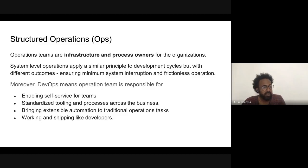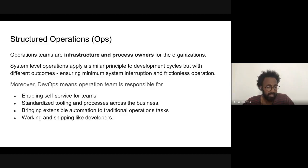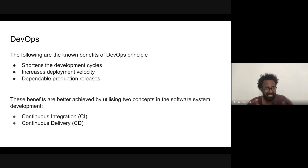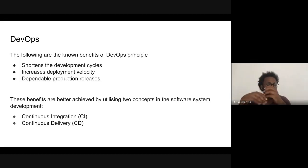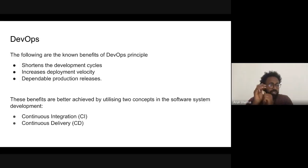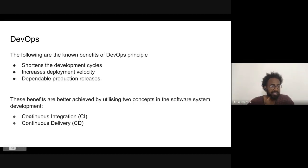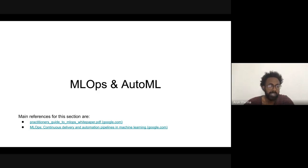Operations in the DevOps framework enables self-service for teams so there is no blocking, and produces standardized tooling and processes across the business, bringing extensible automation. Both development and operations are involved because one cannot be separated from the other — feedback loops connect developers and operators. With that integration, you shorten the development cycle, increase deployment velocity, and have dependable production releases. The tools that increase this DevOps operation are continuous integration and continuous delivery — that's what we call CI/CD.